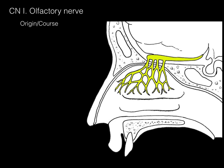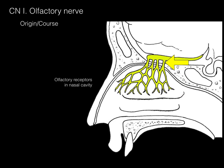The origin and course: the olfactory nerve arises from receptors in the nasal cavity, which includes the superior nasal concha and part of the nasal septum. It then sends its neurons through holes in the ethmoid bone called the cribriform foramina, from the cribriform plate.